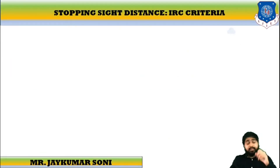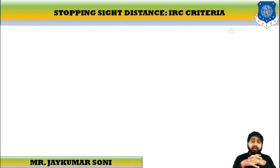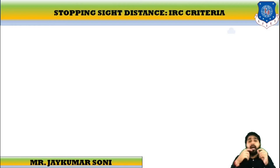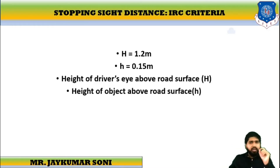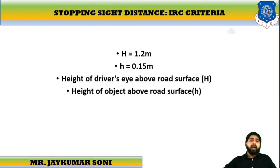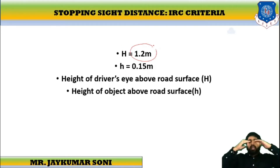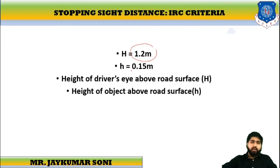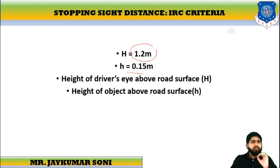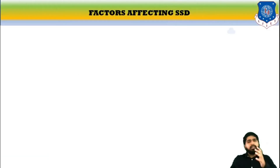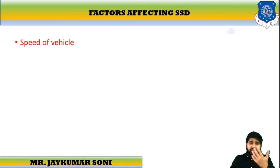Regarding IRC criteria: the driver is sitting on the carriageway with a specified height, and there is also sufficient height of the object, because without sufficient height I will not be able to view the object. The Indian Road Congress has defined the criteria that the height of the driver's eye above the road surface should be 1.2 meters, and the object should be 0.15 meters above the road surface. These are the Indian Road Congress criteria for stopping sight distance.